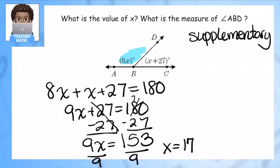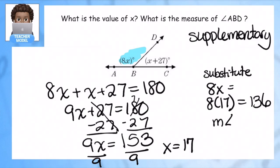9x plus 27 equals 180. 9x equals 153. x equals 17. Now I can substitute 8x when x equals 17, and that gives me a value of 136. So the measure of angle ABD is 136 degrees, and I'll highlight it so someone can see my work.